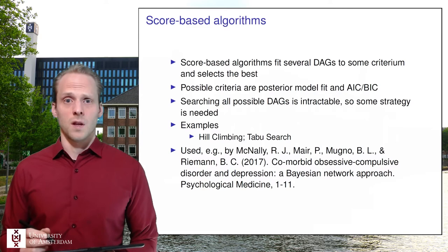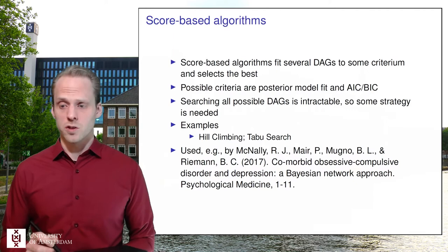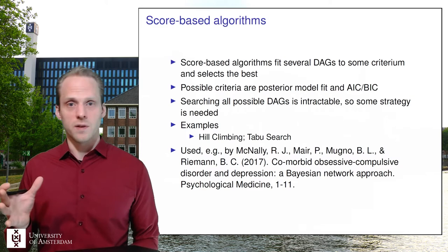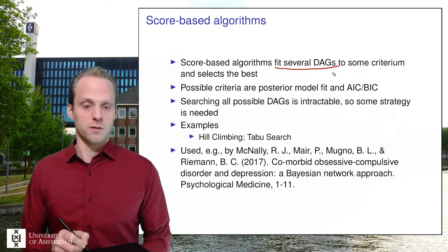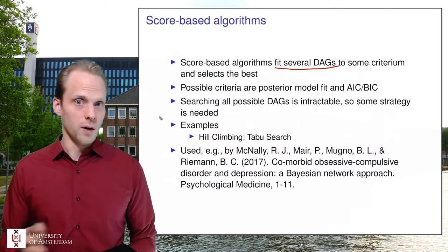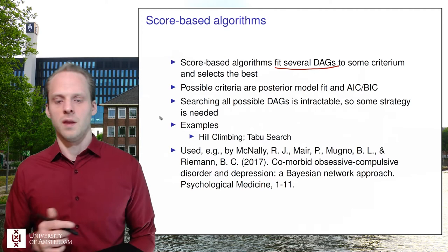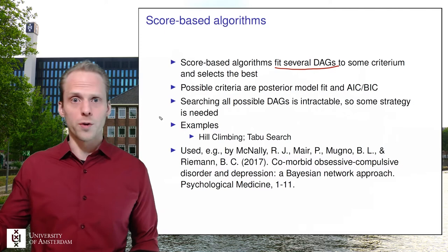Score-based algorithms rely on the entire DAG. Basically they fit the whole DAG, see if it fits, make a change, see if it fits better, and keep doing that until they find the best model. These models fit several DAGs to some criterion — like AIC, BIC, or cross-validation prediction error — and select the best one.